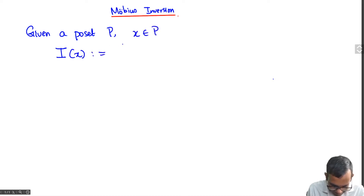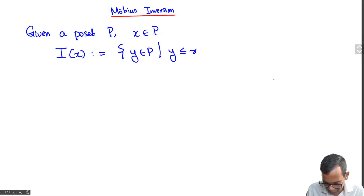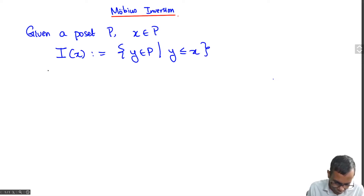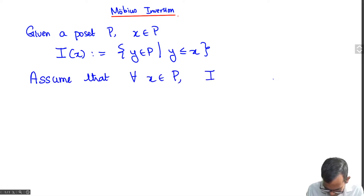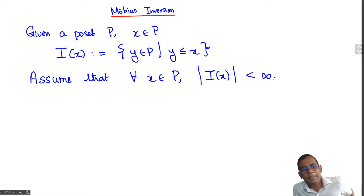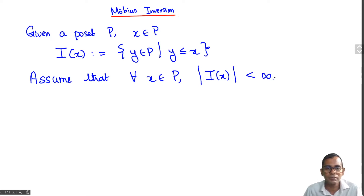Let x be an element of P. Define the ideal I(x) to be the set of all y in P such that y is less than or equal to x. And assume that for all x, I(x) is finite. This will imply that P is locally finite as well, because if we take an interval [x, y], it is contained in I(y).